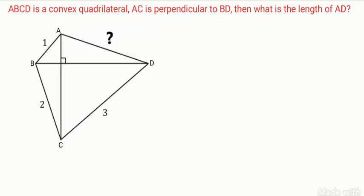ABCD is a convex quadrilateral. AC is perpendicular to BD. Then what is the length of AD? You can see the figure here. They gave AB is 1, BC is 2, CD is 3 given. They are asking AD and they are given AC, diagonals are perpendicular here.